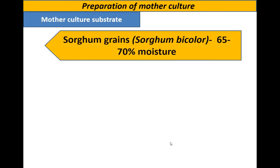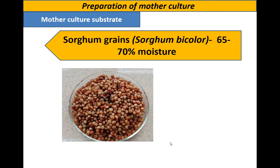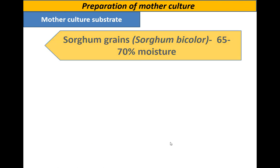Now let's prepare the mother culture. We are required to use sorghum grains with 65% to 70% moisture. We boil the sorghum grains to achieve the 65% to 70% moisture content.